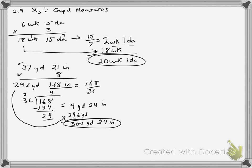Now let's look at division. When the divisor goes in evenly into both units, it's quite simple. You would just say 24 divided by 6 equals 4 hours, and 6 divided by 6 equals 1 minute. But that's not usually what happens — usually we have something less neat than that.